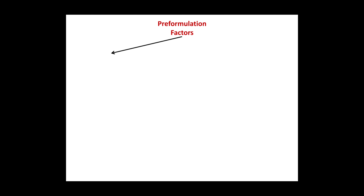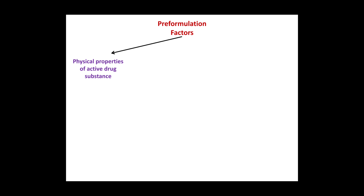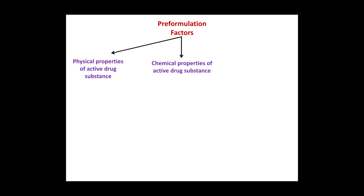Pre-formulation factors are categorized in three groups. The first is physical properties of active drug substance, the second is chemical properties of active drug substance, and the third one is initial formulation approaches.